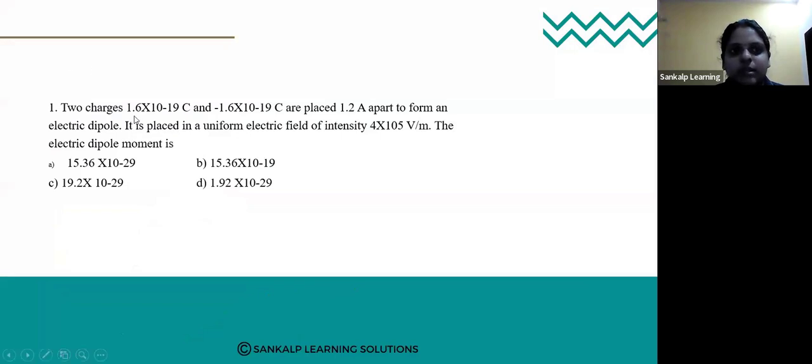Two charges 1.6×10^-19 coulomb and -1.6×10^-19 coulomb are placed 1.2 angstrom apart to form an electric dipole. It is placed in a uniform electric field of intensity 4×10^5 volt per meter.